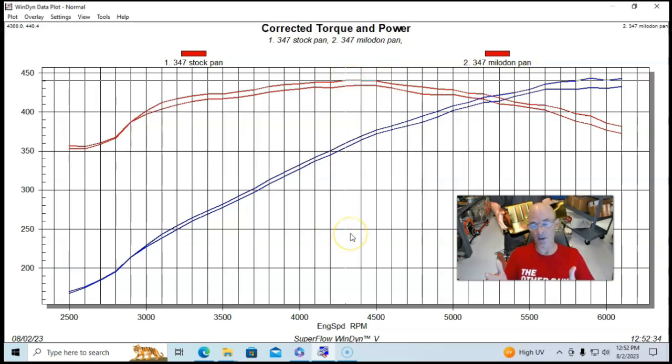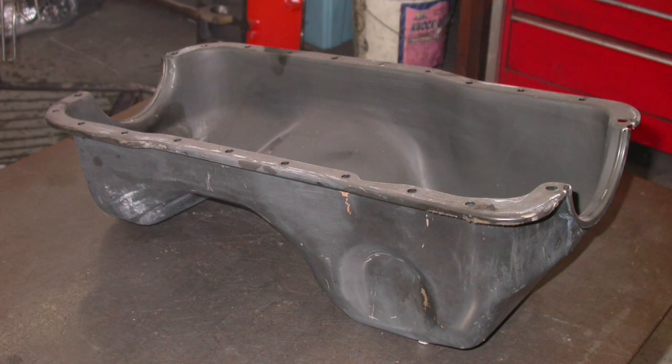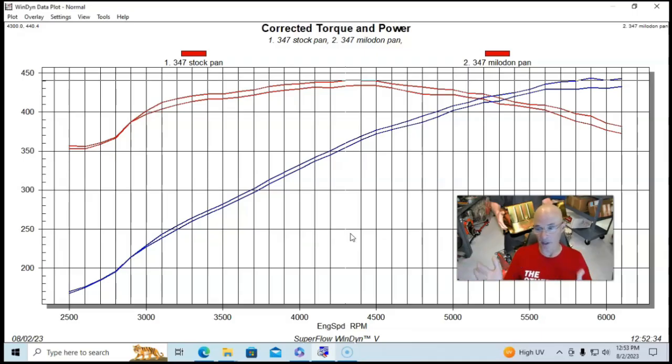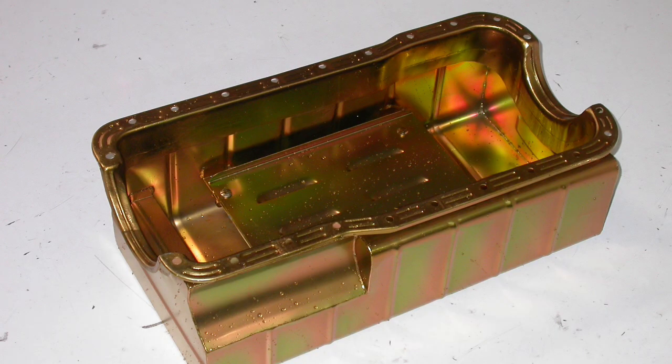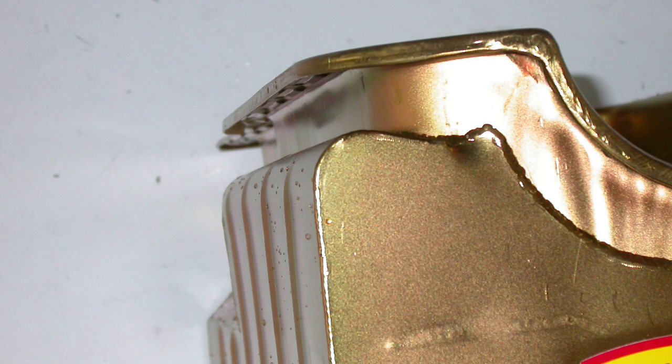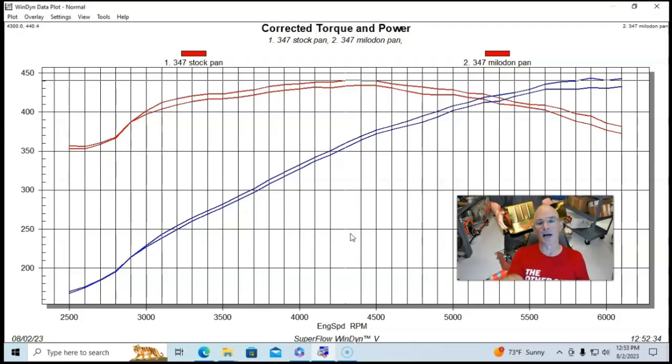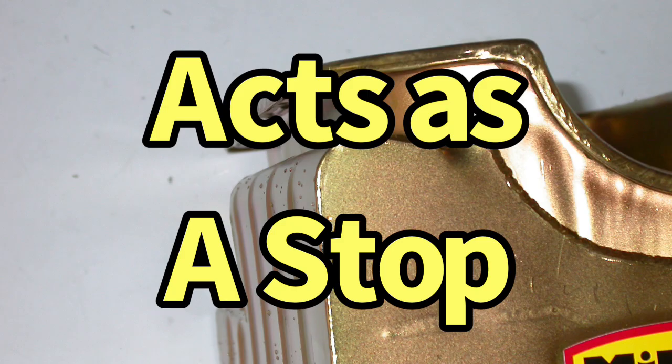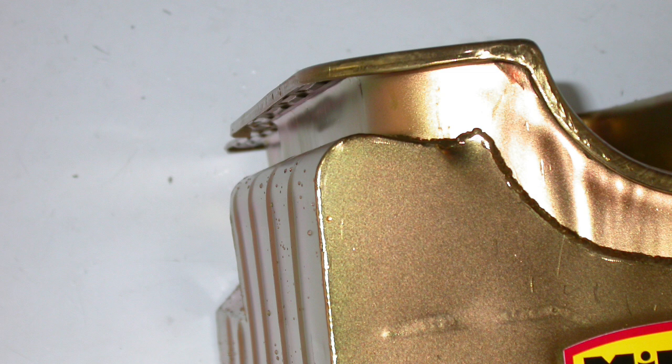And what we see here and the reason that we see it: when we replaced the factory pan and pickup, which had no baffling in it, no nothing, just an open pan basically, and we replaced that with a Milodon pan. The Milodon pan had a couple of things going for it. It had greater capacity, which is fine, but it also had a kick out in the pan. So what happens is when you spin these, when the motor is spinning around, what it does is grab oil and creates this maelstrom of oil and air. And it's obviously rotating this cyclonic action, rotating in one direction.